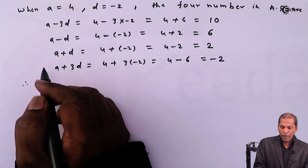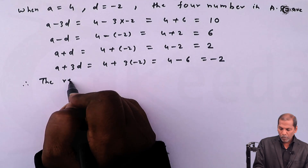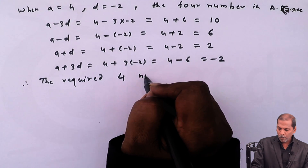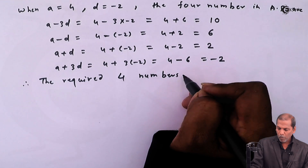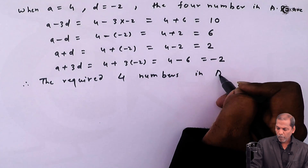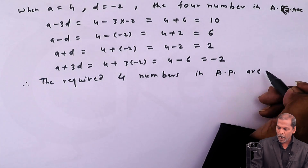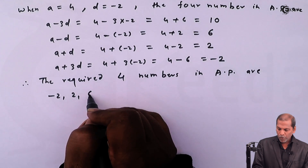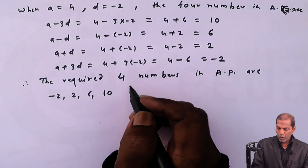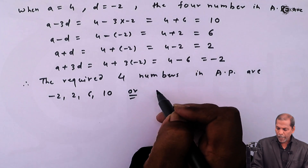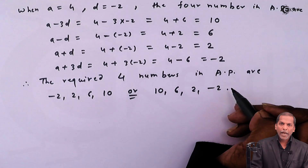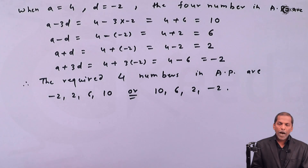Therefore, finally the required 4 numbers in AP are minus 2, 2, 6, 10, or we can write 10, 6, 2, minus 2. This is the required solution for the given problem. Thank you.